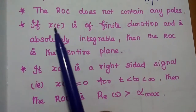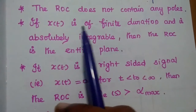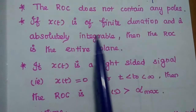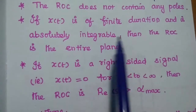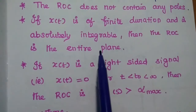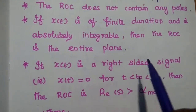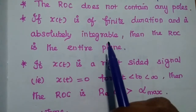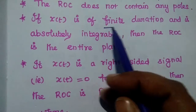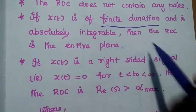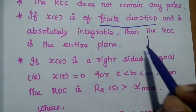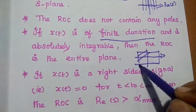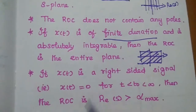The next property is: if X(t) is of finite duration and is absolutely integrable, then the ROC is the entire S-plane. That means if X(t) satisfies the absolutely integrable condition with finite duration, then the ROC is nothing but the entire S-plane.